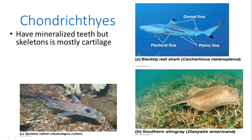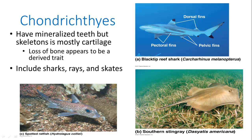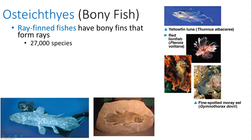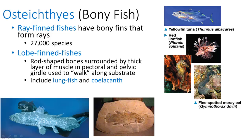Chondrichthyes are our sharks, rays, and skates. They have mineralized teeth but most of their skeleton is cartilage, which seems to be a derived trait — their ancestors had bone that was replaced by cartilage. Osteichthyes are bony fish and include ray-finned and lobe-finned fishes. Ray-finned fishes have bony fins that form rays, while lobe-finned fishes have rod-shaped bones surrounded by thick muscle and pectoral and pelvic fins they can use to walk along the sea floor. This group includes lung fish and the coelacanth, and a similar lobe-finned fish ancestor gave rise to tetrapods.